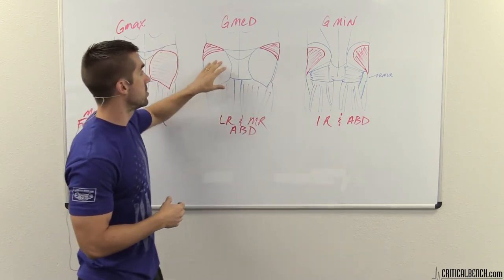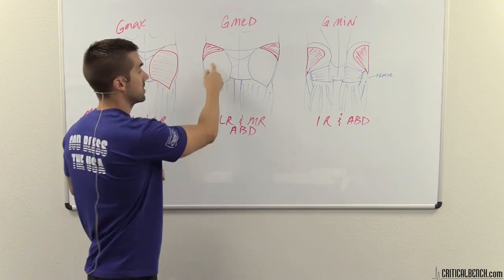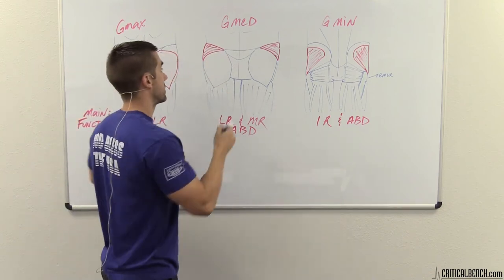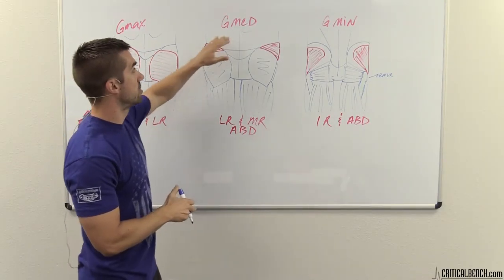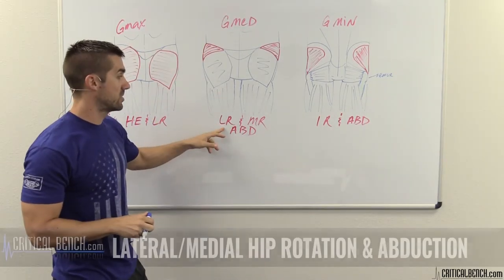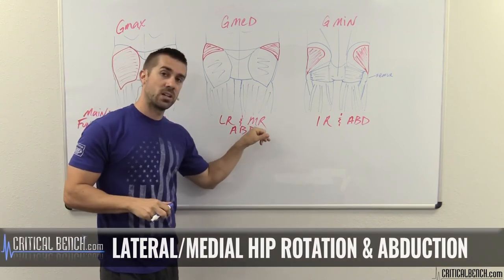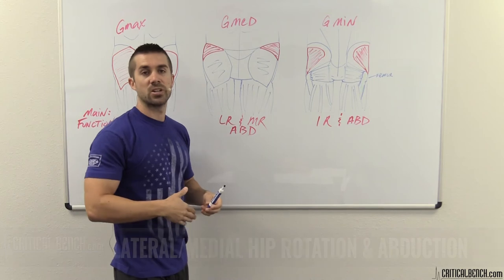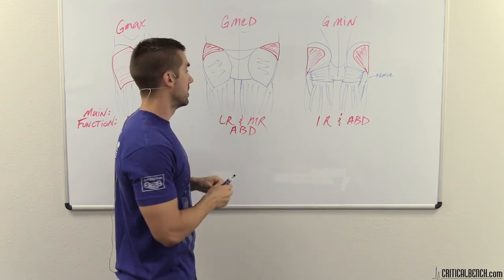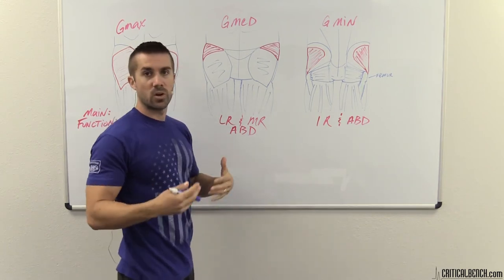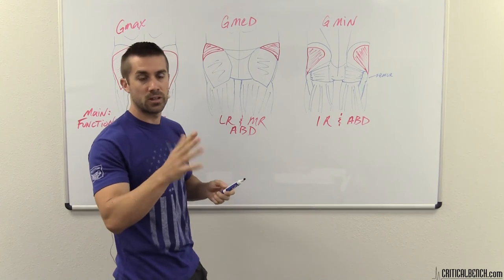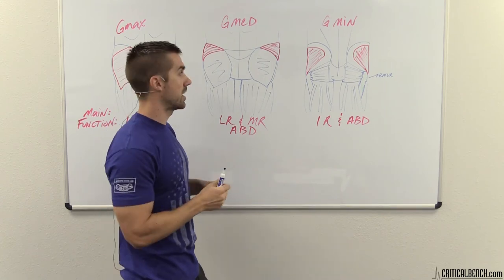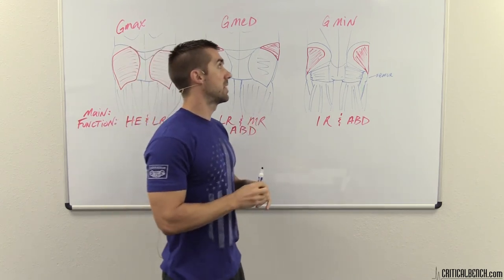The glute min is the smallest of the three. This area right in here — that's your glute max, and the G med is behind it. The main functions of the G med are lateral rotation of the hip, medial rotation of the hip, and also abduction — that's just swinging your leg away from the body. So it's more involved with hip movement in lateral and medial directions.